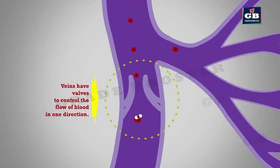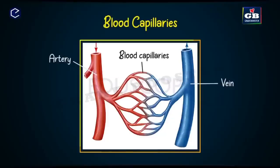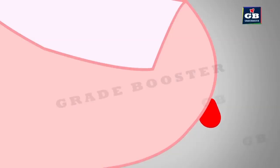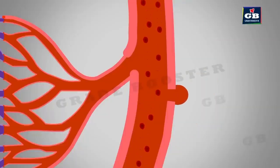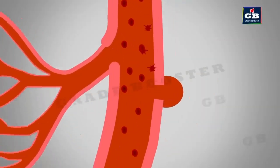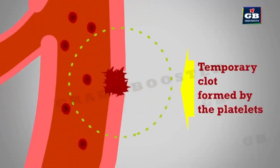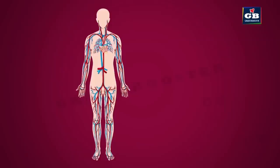To supply materials to cells, arteries split into thin fine tubules called capillaries, which join together to form veins. If blood vessels are cut in an accident, blood flows out, leading to loss of blood. To stop the bleeding, blood platelets move to the site of leakage and plug the cut temporarily. We also have another system called the lymphatic system.